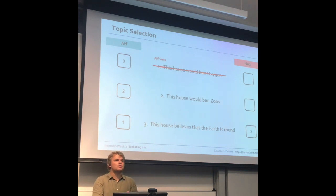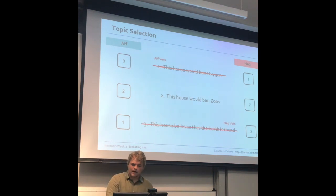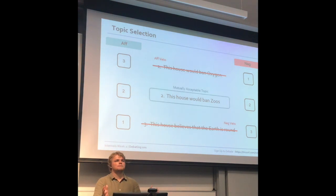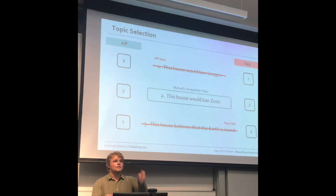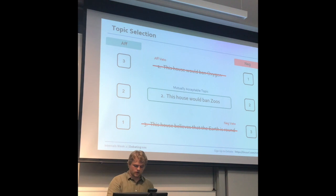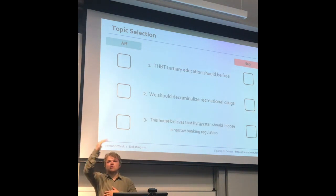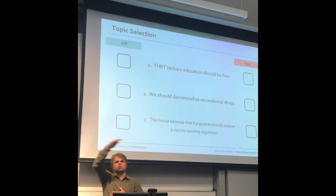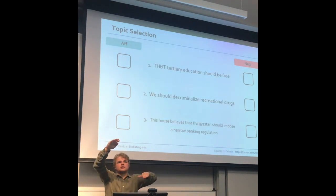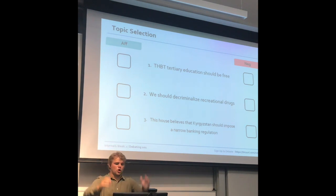The negative would do the same — they would probably veto the final topic. And then you reach what is a mutually acceptable topic, which is the one you're debating. The most straightforward circumstance is where one team vetoes one topic and the other team vetoes another, then you've got one left over.